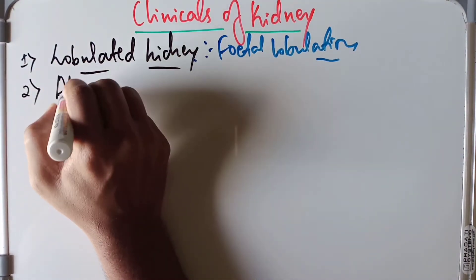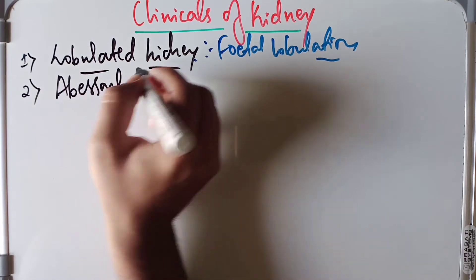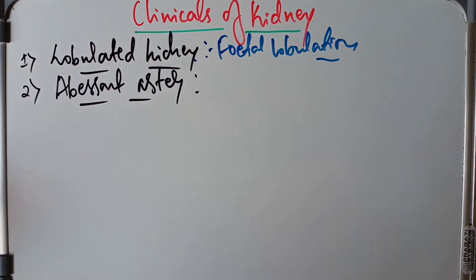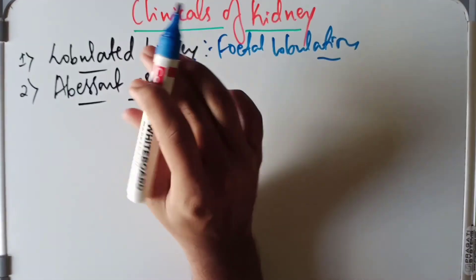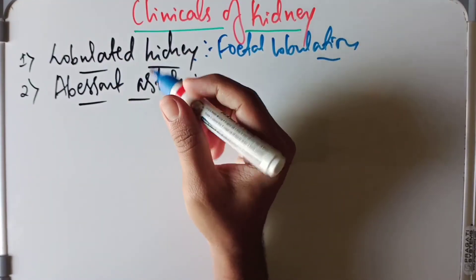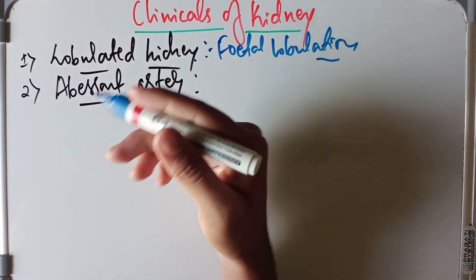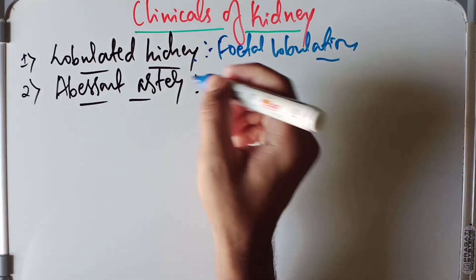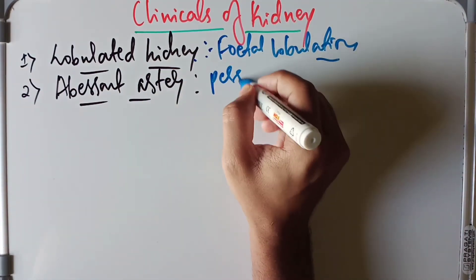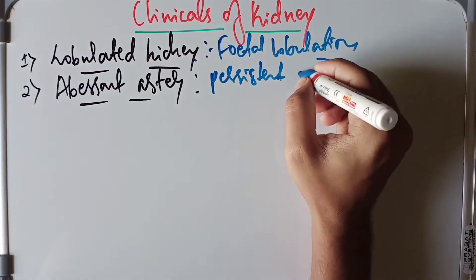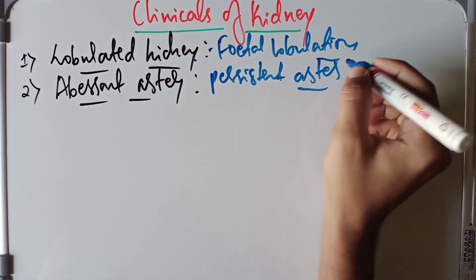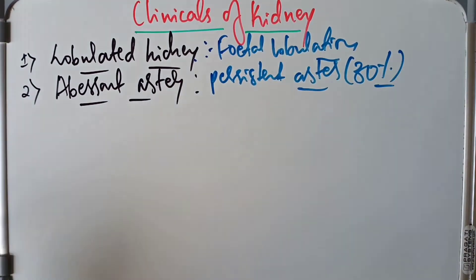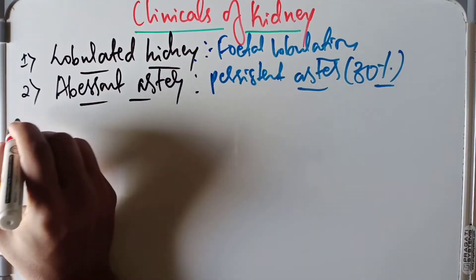Next we have the aberrant artery. The persistence of one of the fetal arteries is common in around 30% of individuals — especially it may be an artery from the aorta to the lower pole of the kidney. This persistent fetal artery present in adult life is known as the aberrant artery.